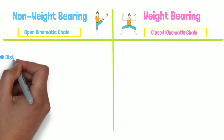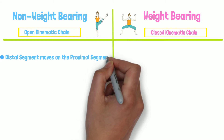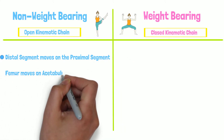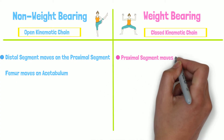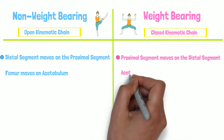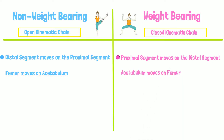In non-weight-bearing, the distal segment moves on the proximal segment; thus, the femur will move on the acetabulum. In weight-bearing, the proximal segment moves on the distal segment; therefore, the acetabulum moves on the femur. Remember, weight-bearing versus non-weight-bearing movement dictates the arthrokinematics at the joint.